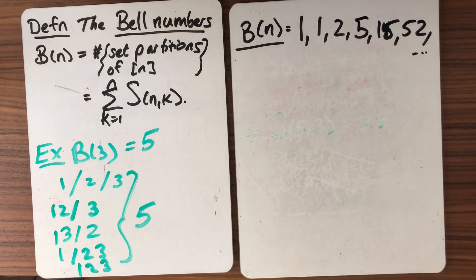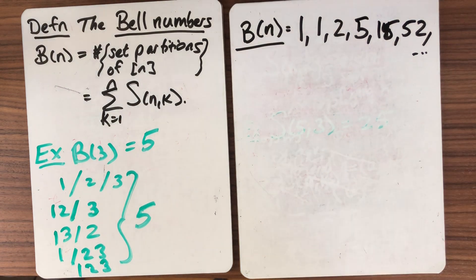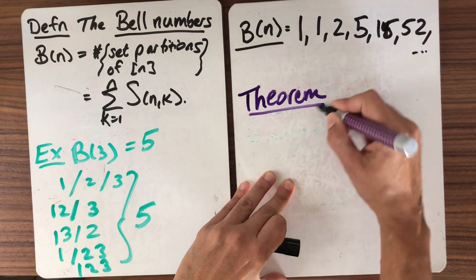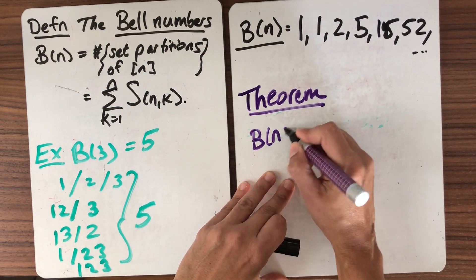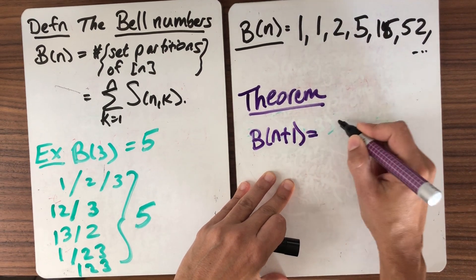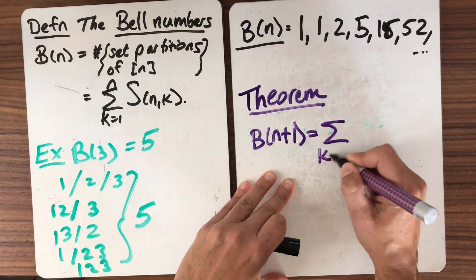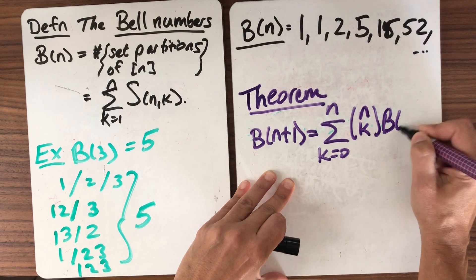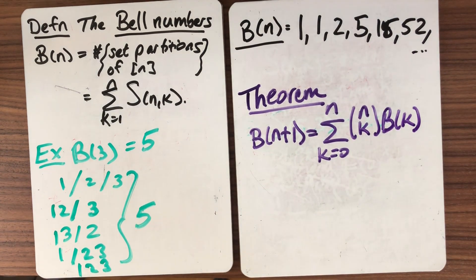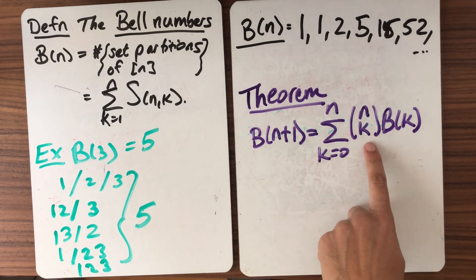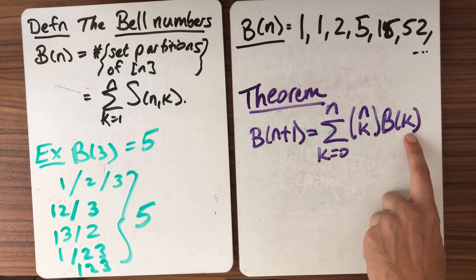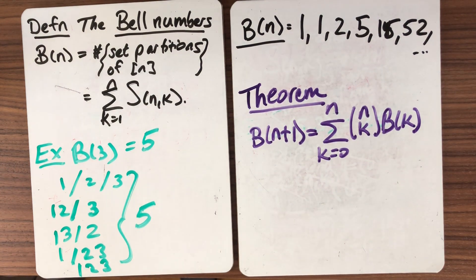So here's the recurrence relationship that tells us. So it turns out, theorem, that B(n+1) is equal to the sum from k equals 0 to n of n choose k, B(k). So this is a rather interesting recurrence relation. We have these binomial coefficients showing up and all of the smaller terms. So this is very different from the enumeration that we got just for permutations. But let's see how this works.